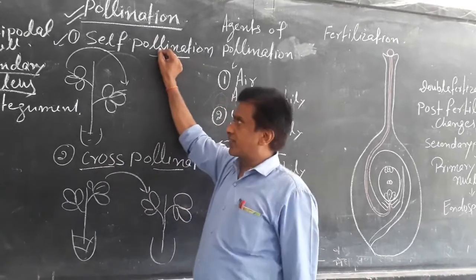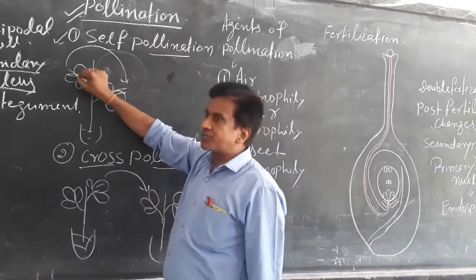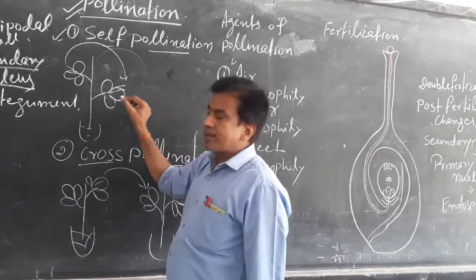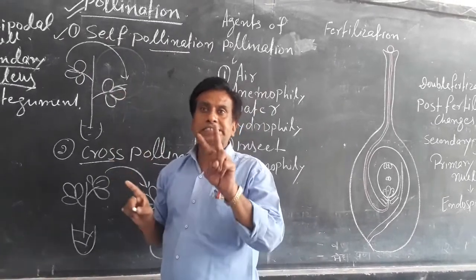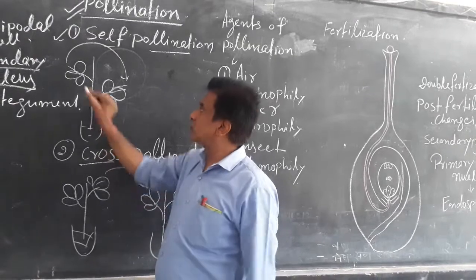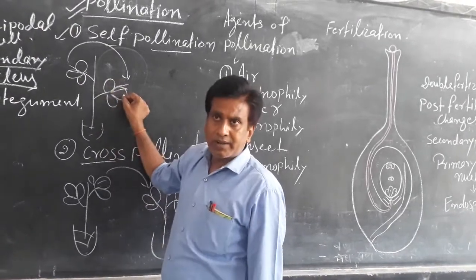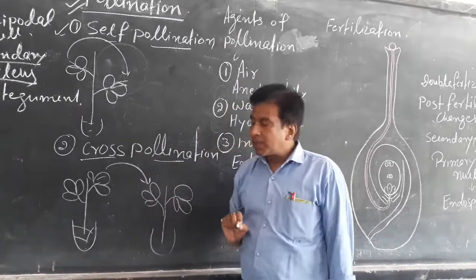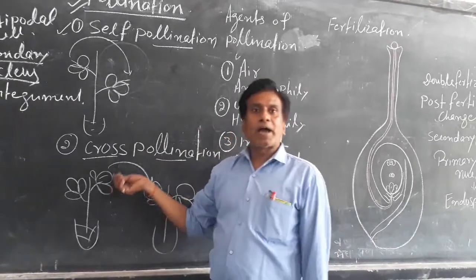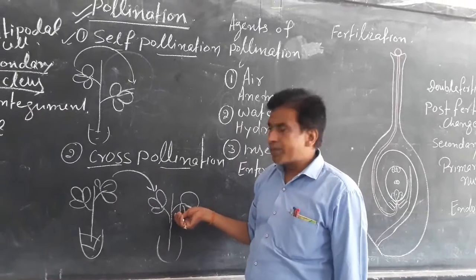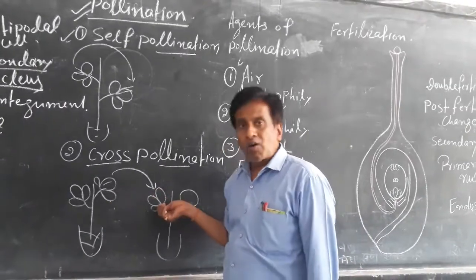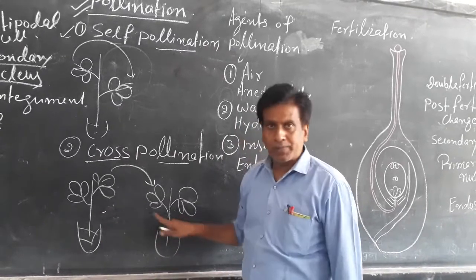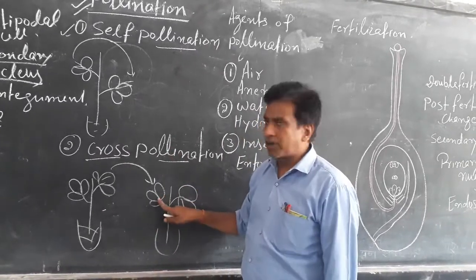In self-pollination, pollen grains transfer from anther to a stigma within the same flower or between two flowers of the same plant. This is called self-pollination. In cross-pollination, transfer of pollen occurs from anther to a stigma between the flowers of two different plants. This is called cross-pollination.